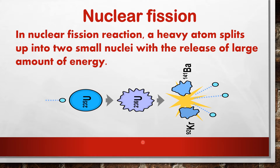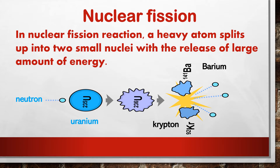Let me explain this reaction. A slow-moving neutron is bombarded on one of the isotopes of uranium. Uranium absorbs this neutron and goes into its excited state, also called the intermediate stage, which is temporary and lasts for only a few seconds. Then this uranium splits into barium and krypton, with the release of three neutrons. We started with a slow-moving neutron and ended with three fast-moving, highly energetic neutrons.